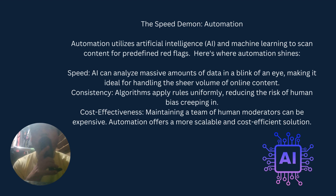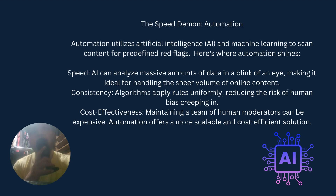Automation utilizes artificial intelligence and machine learning in language learning processes to scan content for predefined red flags. For example, if a post contains a slur or a curse word, the system could automatically flag it and tell the user that this content is banned, educating them on the banned content.